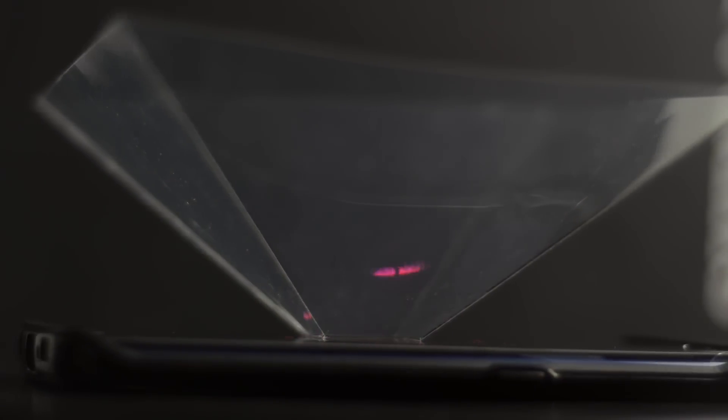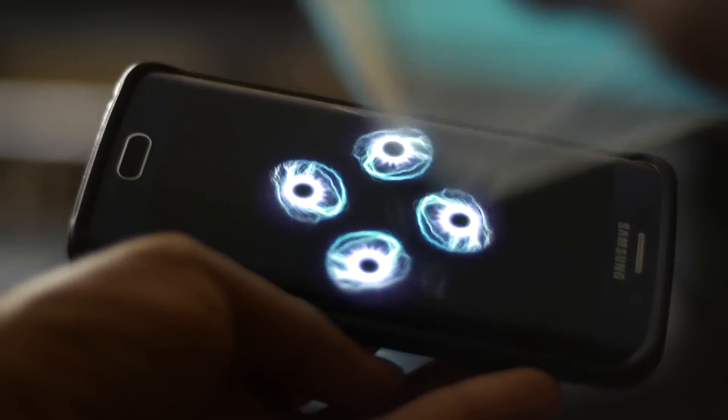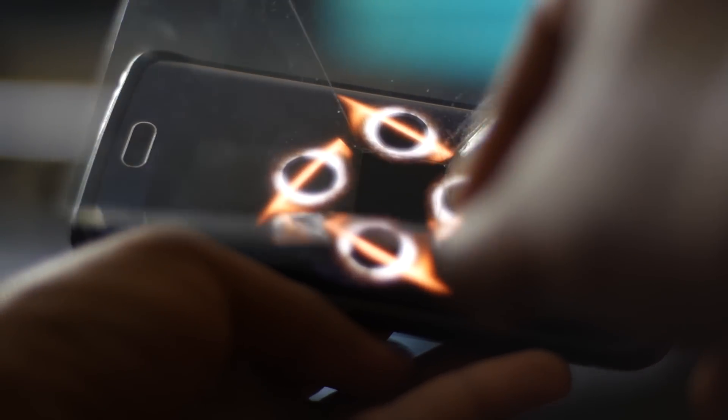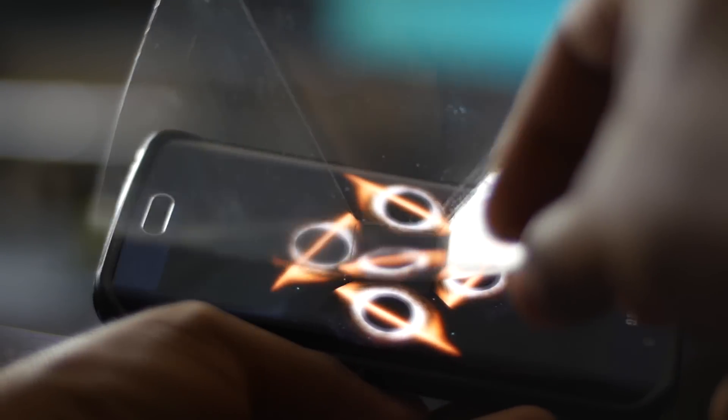Now, a true hologram is a three-dimensional projected object. What you're looking at is not actually a true hologram. It's just a four-sided video being projected onto this folded piece of plastic in the shape of a pyramid.